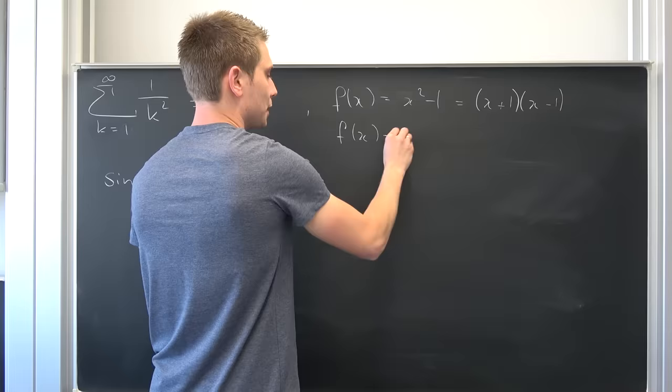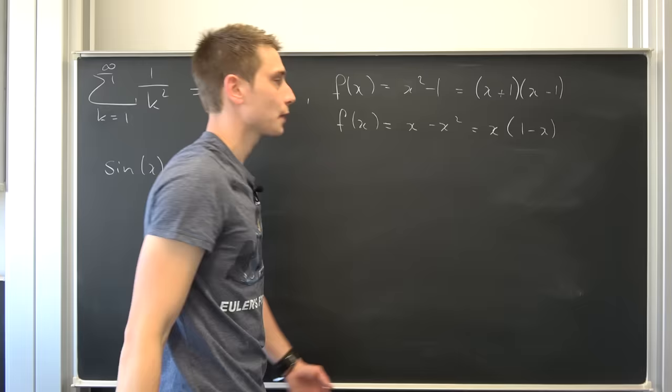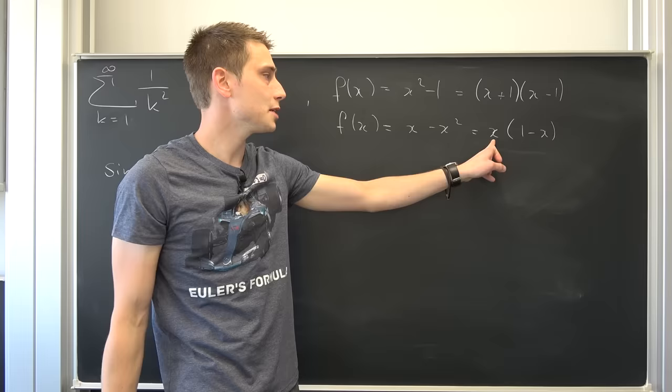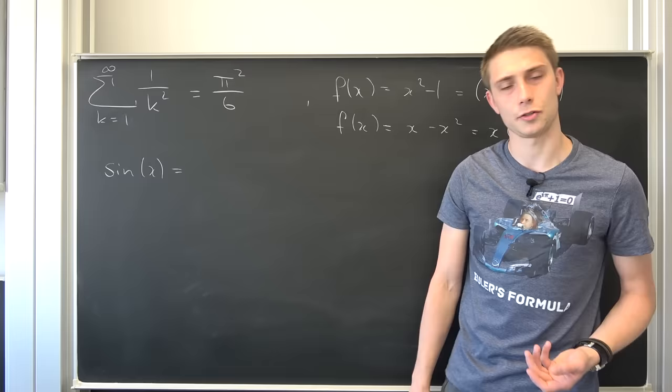Another example would be f(x) = x − x². If we factor out the x we get x times (1 − x). You see x is nothing but (x + 0), so 0 is one of our zeros, and also we have 1 as one of our zeros. We have turned this into linear factors for those polynomials.